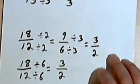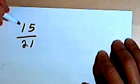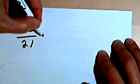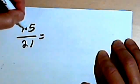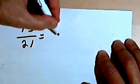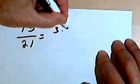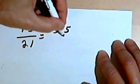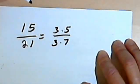A few more examples. Here I have the fraction 15 over 21, and I want to show you another way of looking at it. We could think of 15 as two numbers that were multiplied together. In other words, 15 is 3 times 5, and 21 is 3 times 7.